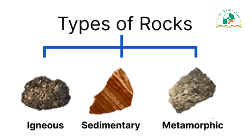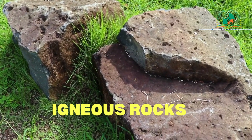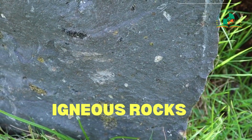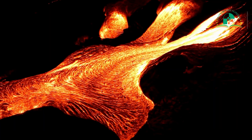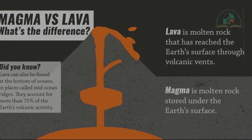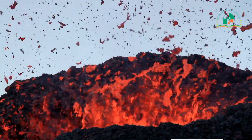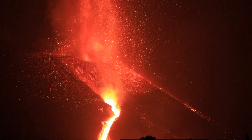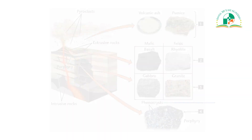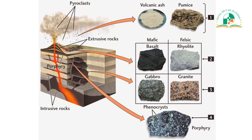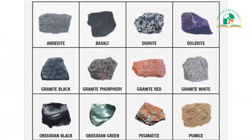The first rock type is igneous rocks, also known as primary rocks. They are formed by the cooling, solidification, and crystallization of molten earth materials known as magma and lava. The difference between magma and lava is that when the molten earth material is beneath the surface of the earth, it is called magma. Igneous rocks are further categorized into two types: intrusive and extrusive igneous rocks. Some examples are basalt, gabbro, obsidian, and pumice.